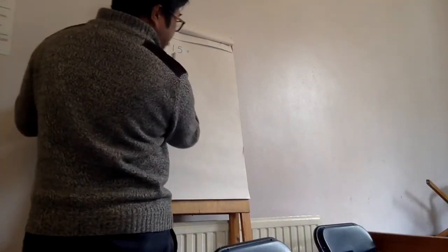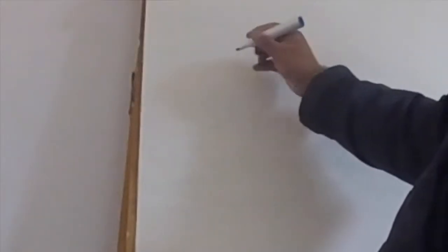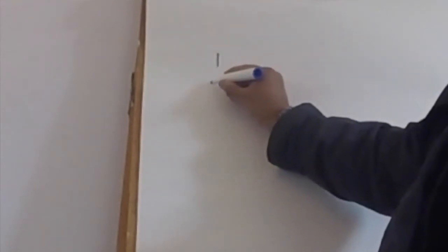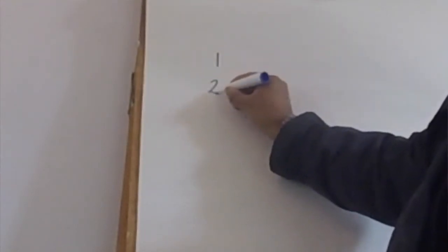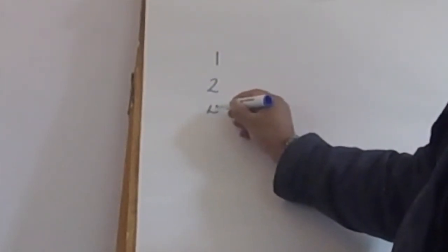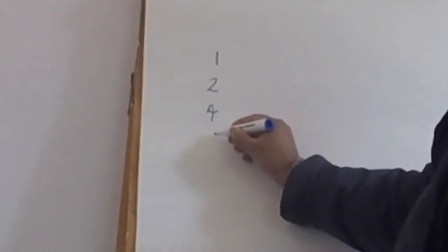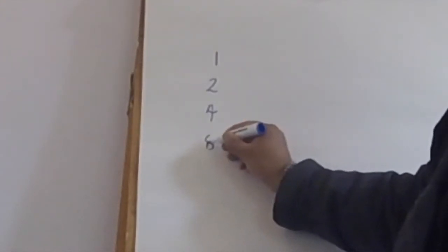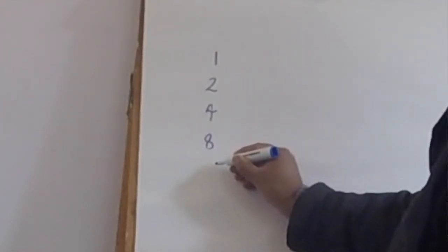What's double of one? Two. What's double of two? Four. What's double of four? Eight. And so on.